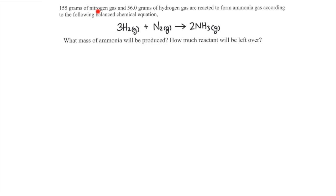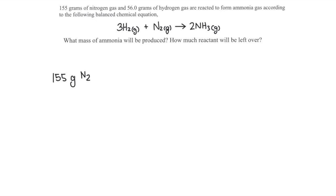If 155 grams of nitrogen is consumed, how much ammonia would be produced? First we'll convert the mass of nitrogen gas to moles, and then we'll compare that to ammonia by multiplying by the mole ratio. To convert 155 grams to moles, we divide by the molar mass of nitrogen gas. Nitrogen gas is N₂ with two nitrogen atoms, and each nitrogen atom has a molar mass of 14, so the molar mass of nitrogen gas is 28.